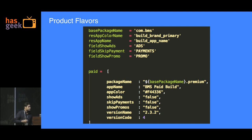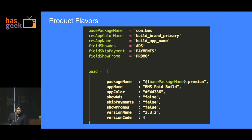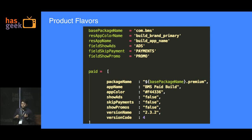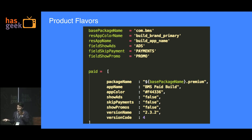Moving on to Gradle. The build system changed, and a lot of new features like product flavors, variants, and configurations came in. So, product flavors — how many of you have two different code bases just to maintain a free version and a paid version?